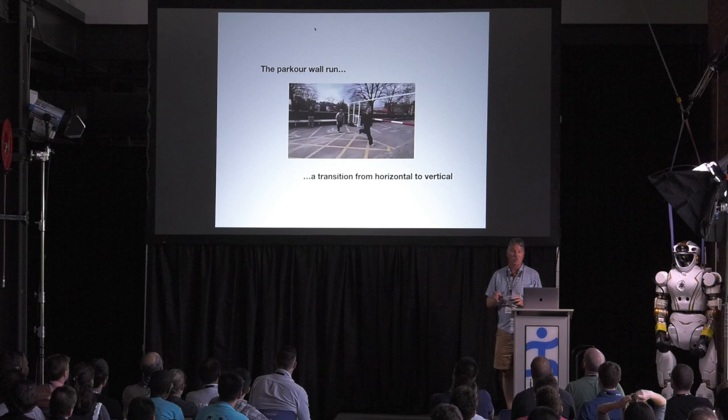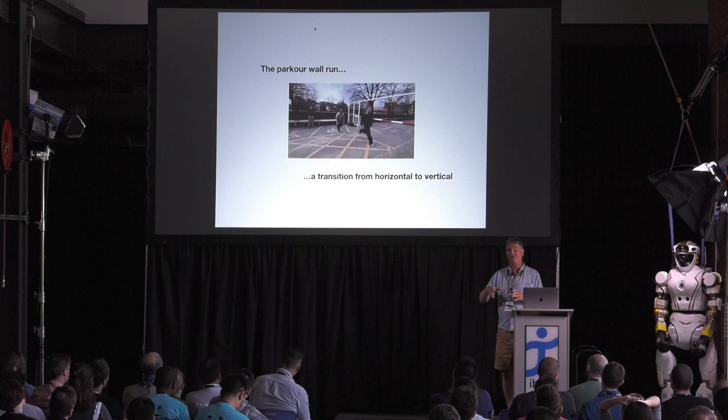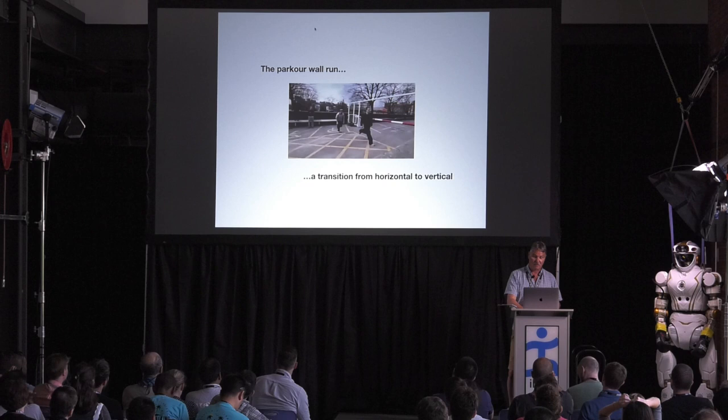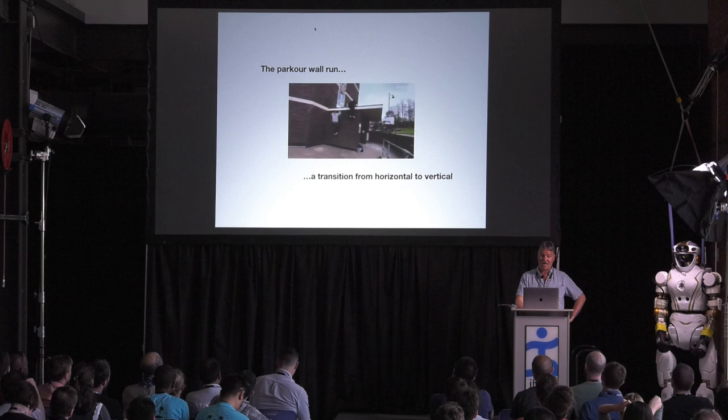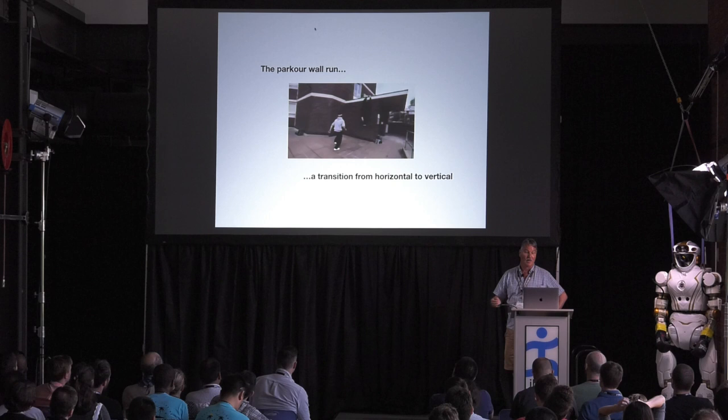One of the ways we approach this is to take predictive models, try to predict how people should move in particular circumstances, and then dissect the model. We tend to focus on events that are discrete. So this is the parkour wall run, where the objective is to use your legs to scale a wall that you're not capable of scaling by simply jumping up there. So there's a particular technique that's used to do that.